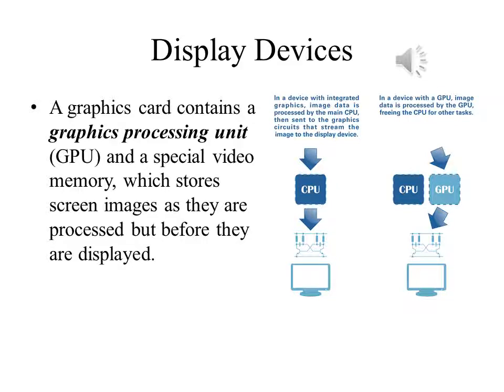Where the circuitry is mounted is not the most important part. What is much more important is where this processing is done and where the display image is stored in memory. Integrated graphics uses the main CPU for this purpose, and the display image is usually stored in a portion of main memory. If you have dedicated graphics, the processing is done on a separate processor called the graphics processing unit, with special memory set aside for storing the video image.